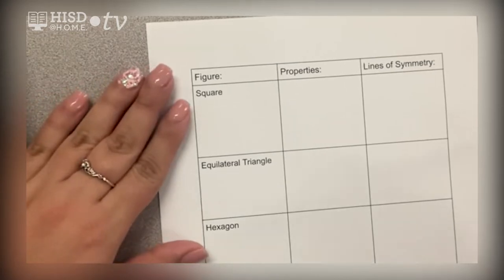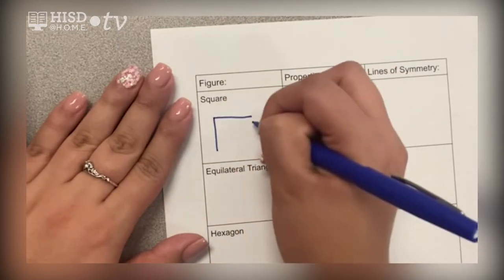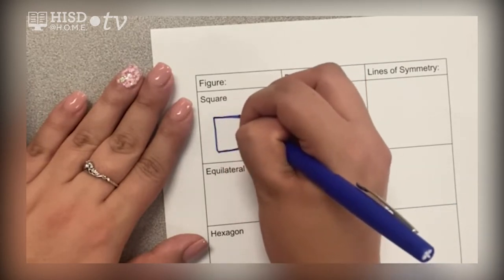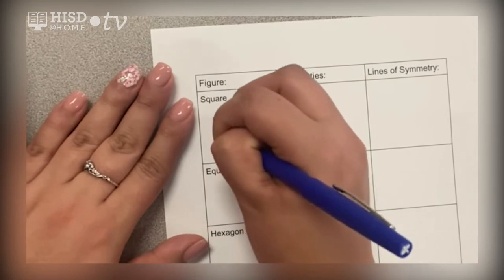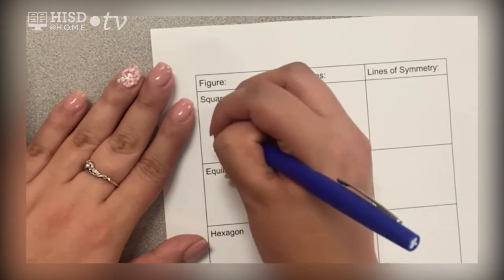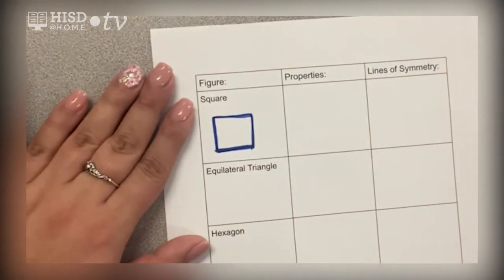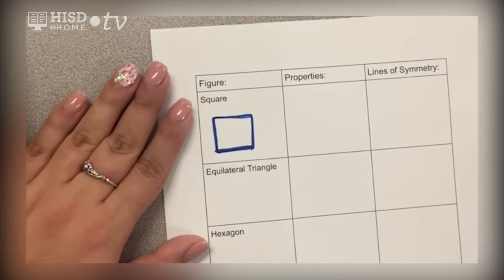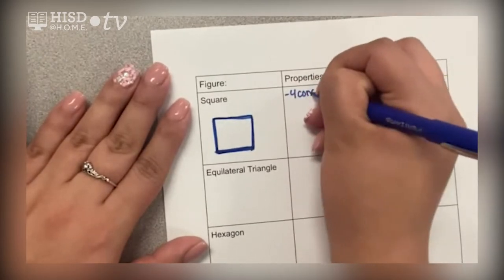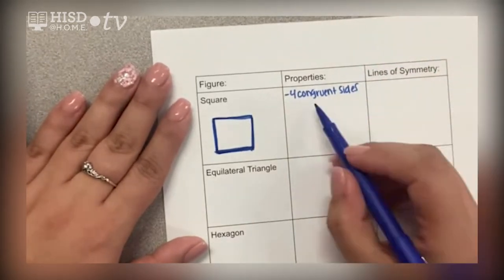Let's begin with squares. Draw a picture of a square. Remember, squares are different from rectangles because squares have equal sides — all sides of a square are equal, so one side is not going to be longer than another. We're going to begin with the properties of a square. A square has four congruent sides.